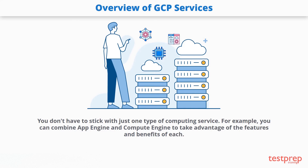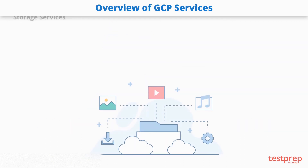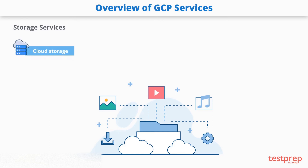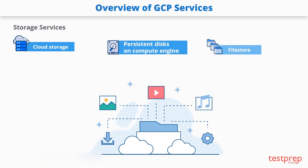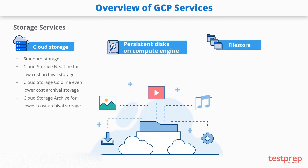The next service category is Google Cloud storage services. Whatever your application or requirement, you'll probably need to store media files, backups, or other file-like objects. Google Cloud provides a variety of storage services; the commonly used ones are Cloud Storage, persistent disks for Compute Engine, and Filestore. With Cloud Storage you get consistent, scalable, and large-capacity data storage. You can select standard storage for maximum availability, or choose Cloud Storage Nearline or Coldline for low-cost archival storage needs.